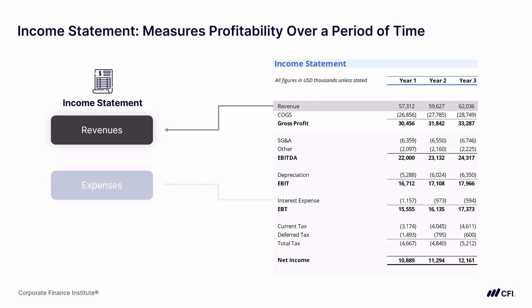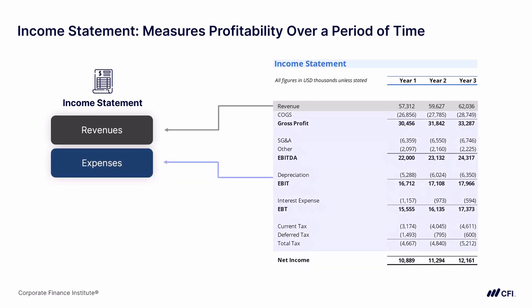Next, the income statement shows a number of line items for expenses. Each one of these expenses has been matched to the accrued revenue above it. Essentially, once we accrue revenue to a certain period based on when it has been earned, we then match all of the associated expenses with that revenue into the same period. By accruing revenue into the correct period and matching the associated expenses, we end up with a meaningful measure of profitability or loss for the company.